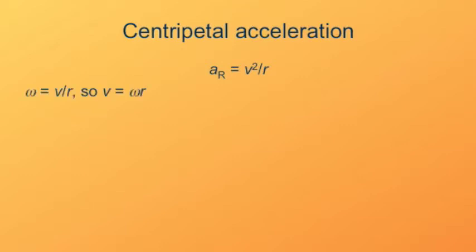We also know for a rotating object, omega, the angular speed, is equal to the tangential speed divided by the radius, so we can also find the speed v as the angular speed omega times the radius r. We can substitute that in.